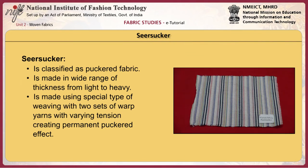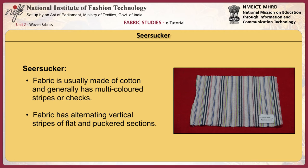Seersucker is classified as a puckered fabric and is made in a wide range of thickness from light to heavy. It is made using a special type of weaving with two sets of warp yarns with varying tension, creating a permanent puckered effect. The fabric is usually made of cotton and generally has multicolored stripes or checks. The fabric has alternating vertical stripes of flat and puckered sections.